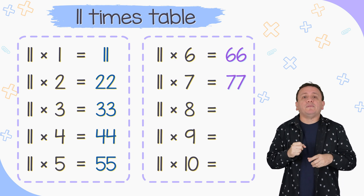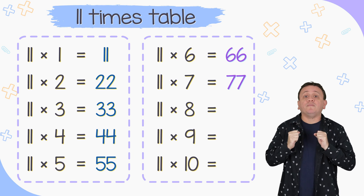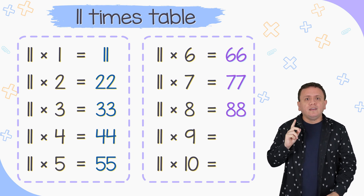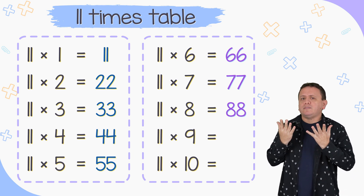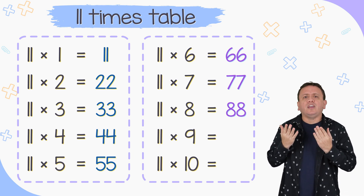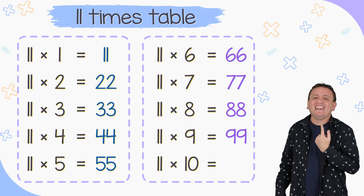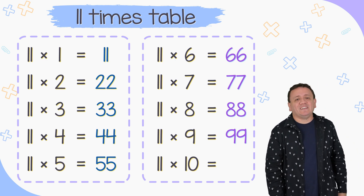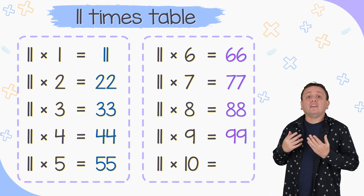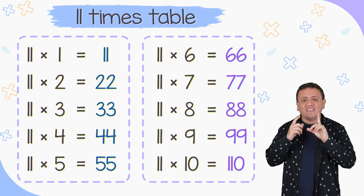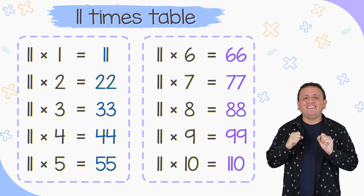You're right. 11 times 8 equals 88. And 11 times 9 equals 99. Finally, 11 times 10 equals 110.